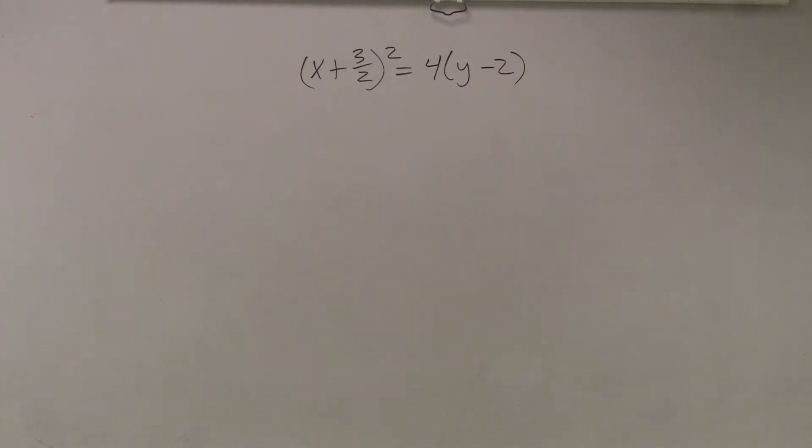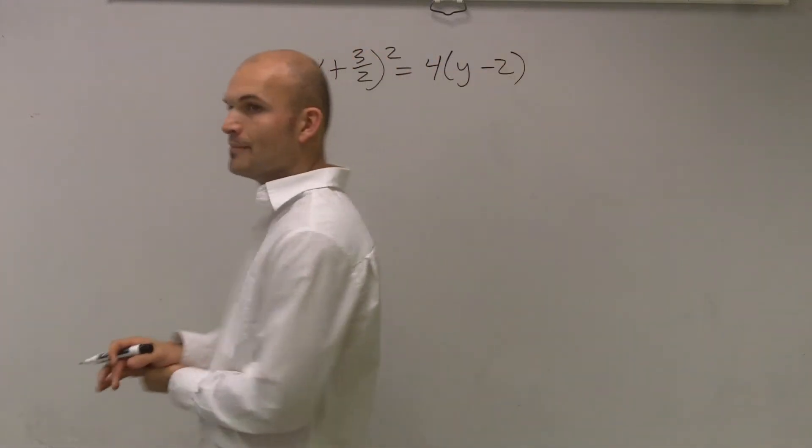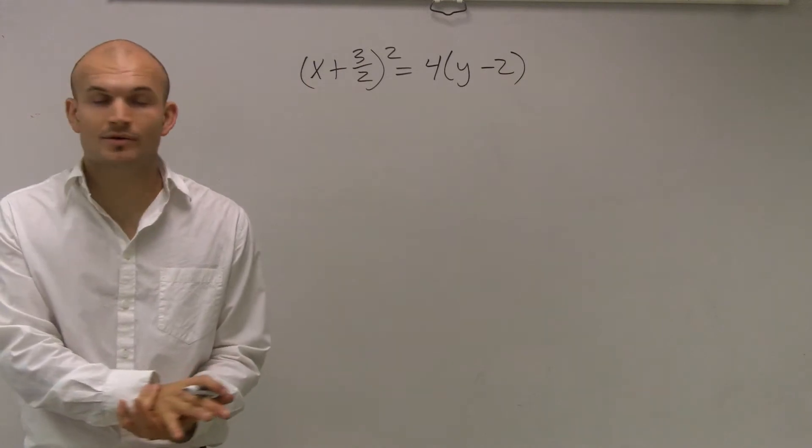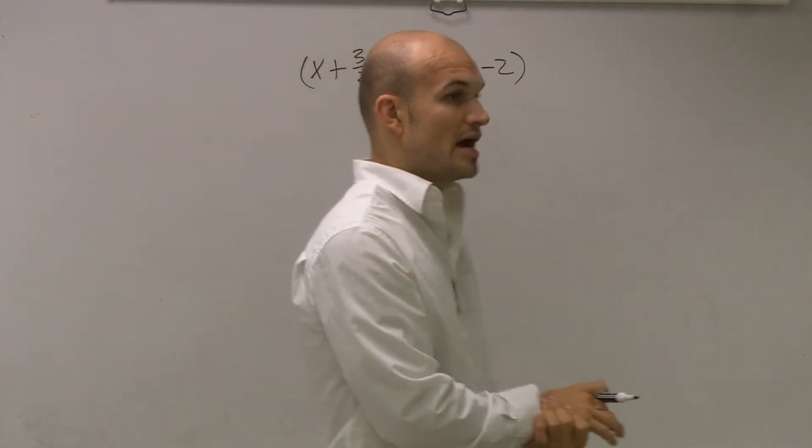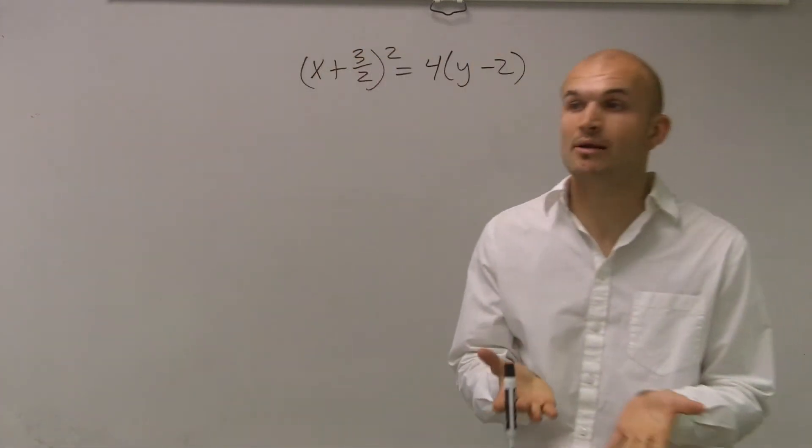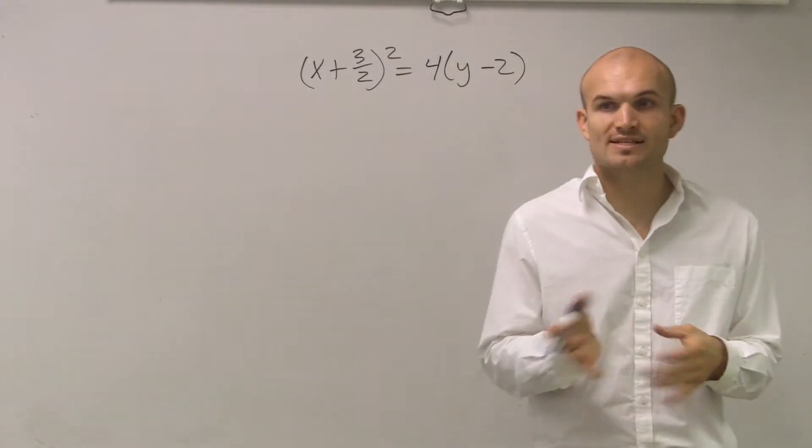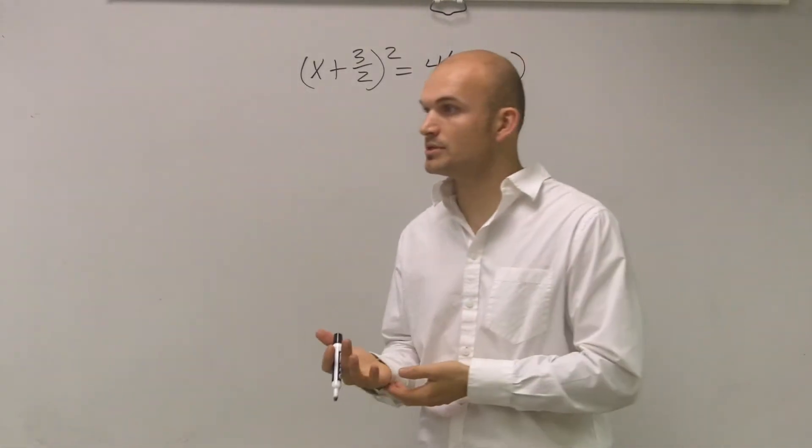The steps for this one. So it says (x + 3/2)² = 4(y - 2). The first thing I want to do is determine what kind of parabola I'm going to be dealing with. Am I going to be dealing with a parabola that's vertical, opens up or opens down, or one that opens to the right or opens to the left?